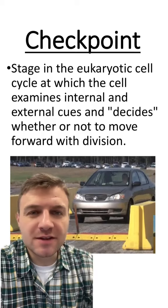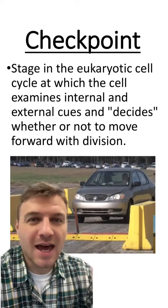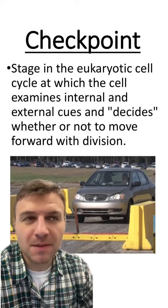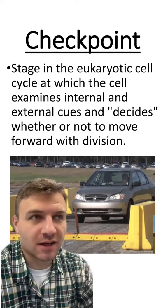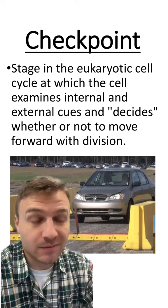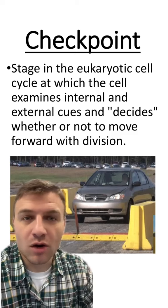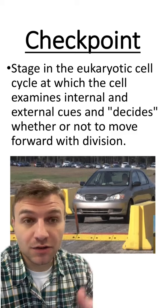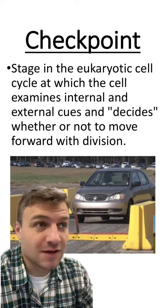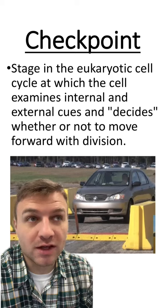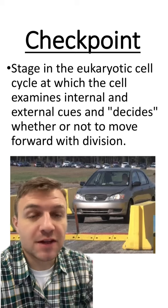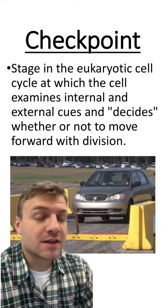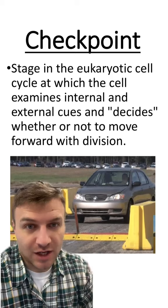Let's talk about checkpoints within the cell cycle. At a vehicle checkpoint, the car is going to be stopped and someone's going to make sure everything is okay. If everything is okay, then the car can go through. If the car doesn't pass the checkpoint, it will be stopped — maybe searched. There's a lot of things that can go on at these checkpoints. Make that analogy with cell cycle checkpoints.